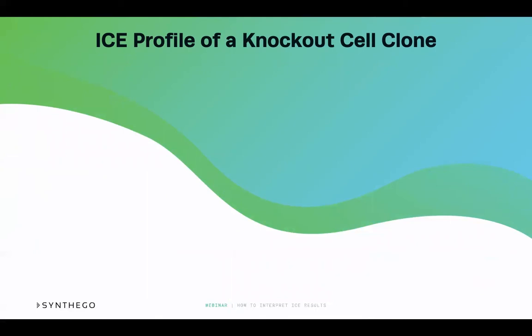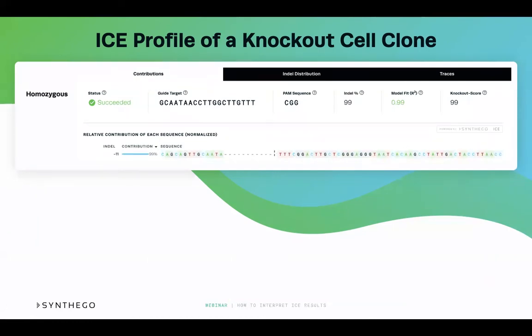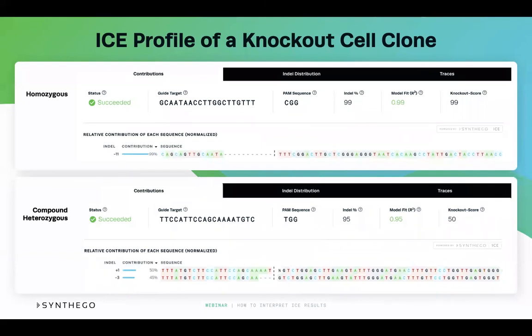When submitting your clones to ICE for analysis, ICE will have the ability to assist with determining the zygosity, as long as you are certain your clones come from a single cell. On top, you can see a homozygous knockout clone that contains close to 100% contribution of a single type of edit. On the bottom, you can see a compound heterozygous knockout clone for a diploid cell line where there are two different types of edits — one in each allele — each contributing at or close to 50% of the sequences detected. In this particular case of a diploid compound heterozygous clone, one of the alleles contains an edit that is a minus-3. ICE analysis shows an indel percentage of 95 but a knockout score close to 50%, because this edit being a multiple of 3 does not introduce a frameshift and hence is not counted towards the knockout score.